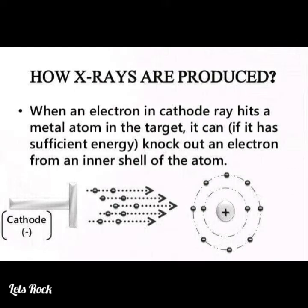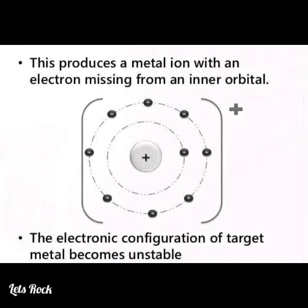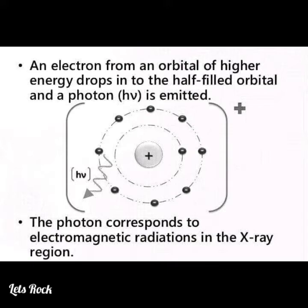How X-rays are produced: When an electron in a cathode ray hits a metal atom in the target, it can, if it has sufficient energy, knock out an electron from an inner shell of the atom. This produces a metal ion with an electron missing from an inner orbital, making the electronic configuration of the target metal unstable. An electron from an orbital of higher energy drops into the half-filled orbital and a photon hν is emitted, corresponding to electromagnetic radiation in the X-ray region.